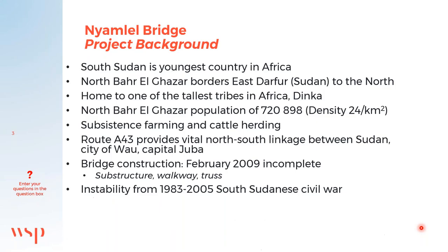South Sudan is considered the youngest country in Africa. North Bar-el-Ghaza borders Sudan to the north, and this region is home to one of the tallest tribes in Africa, the Dinka tribe. North Bar-el-Ghaza has a population of 720,000 with a density of 24 people per square kilometer. The community mainly depends on subsistence farming and cattle herding. National Route A43 provides a vital north-south linkage between Sudan, the city of Wao, and South Sudan's capital, Juba.